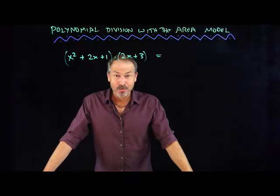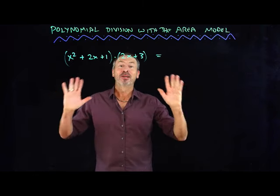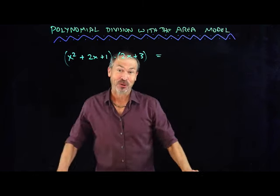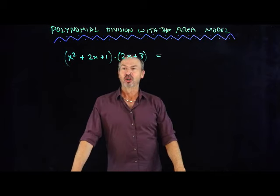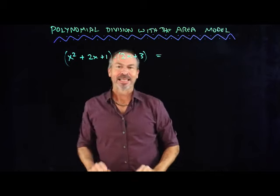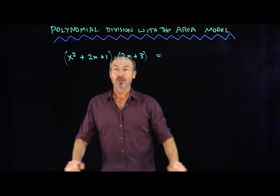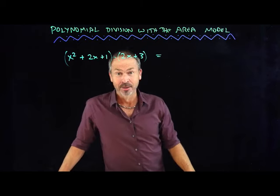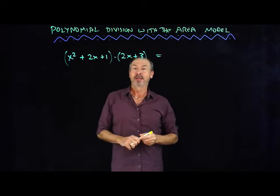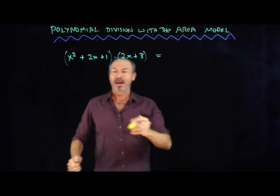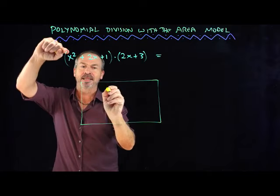G'day. The area model you learn for doing multiplication in grade school is absolutely relevant for work you do in high school as well. Let's do some polynomial algebra. Let's play with numbers in base x rather than base 10. For example, let's work out (x² + 2x + 1) times (2x + 3). I'm going to use the area model. This is a multiplication problem — I think of it as a rectangle and I'm going to break the rectangle into pieces that make sense.